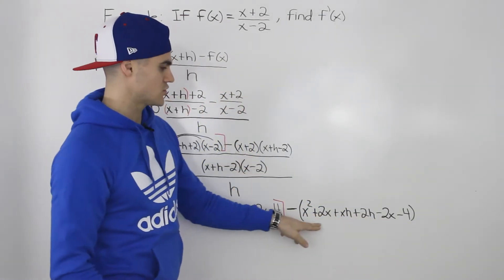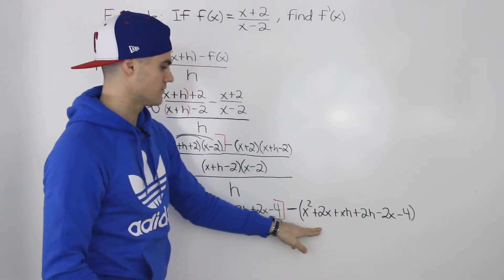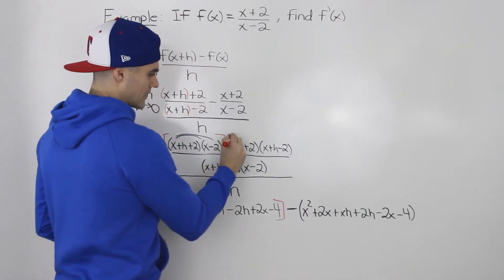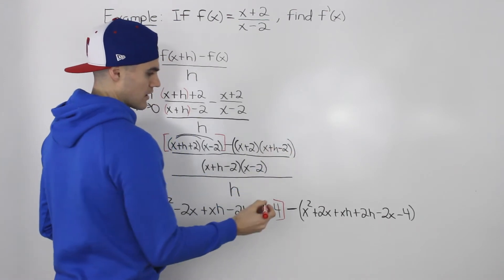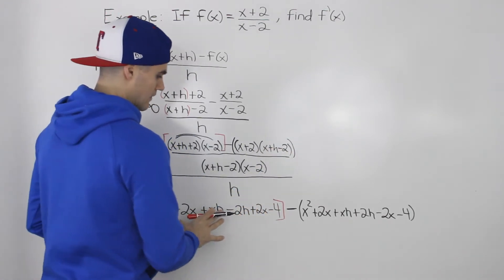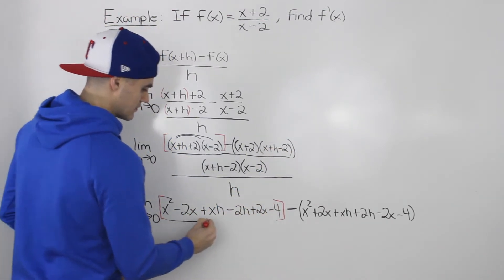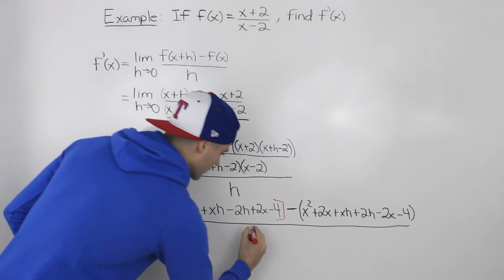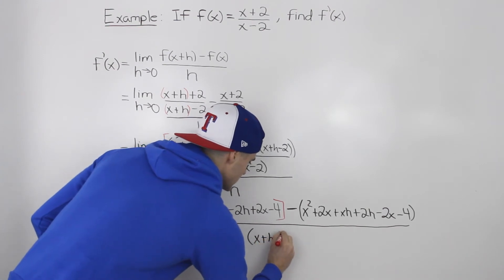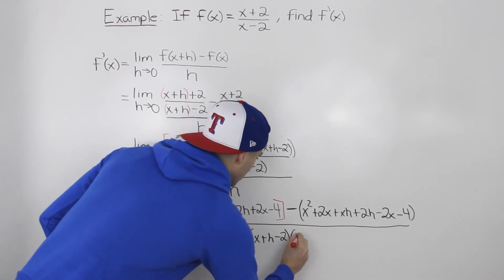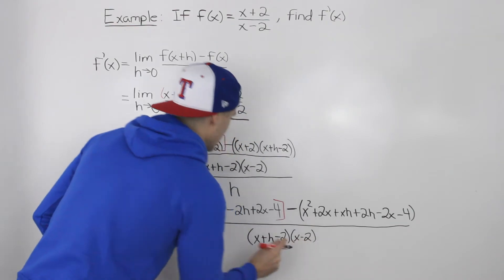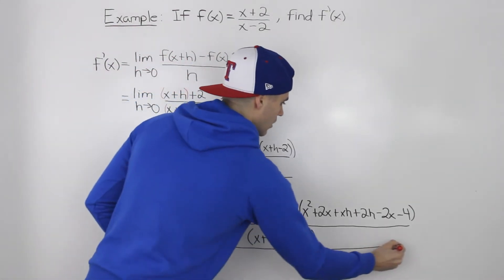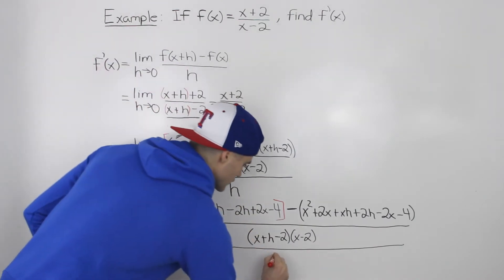Make sure you keep the brackets in front of that negative, because it's like you're subtracting that whole expression. This is still all over the denominator (x+h-2)(x-2), and this whole thing is still all over h.